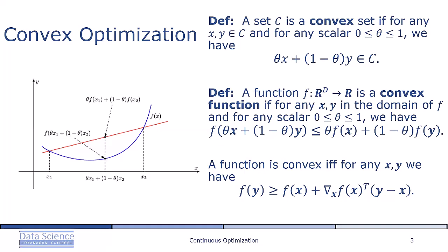Convex sets are such that a straight line connecting any two elements of the set strictly lies inside the set.